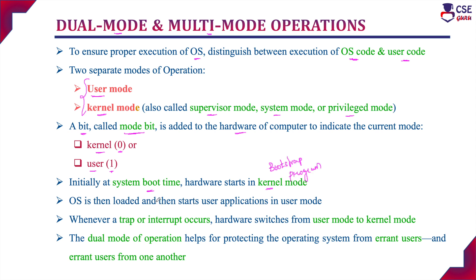Once the system is switched on, the initial code that boots with the system is the bootstrap program. Initially, execution of the computer starts with kernel mode only. In kernel mode, the operating system will be loaded. Then it will allow other user applications to execute. Whenever a trap — a software interrupt — or a hardware interrupt occurs in user mode, the hardware will switch from user mode to kernel mode.